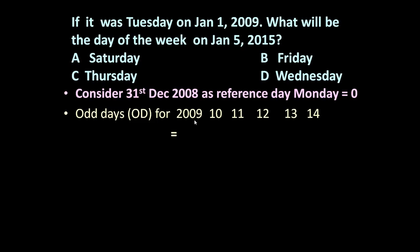So 2009 is an ordinary year having 365 days. 365 days means 52 weeks plus one extra that is called odd day. 2010 is again an ordinary year, 1 odd day. 2011 means 1 odd day.